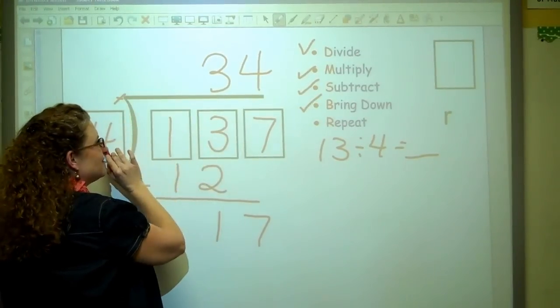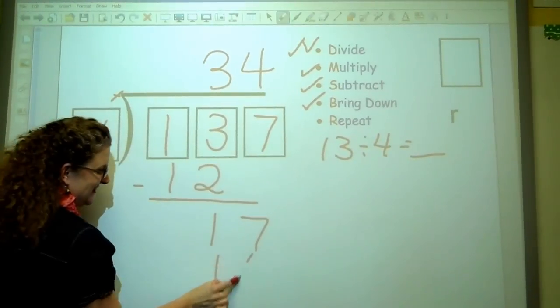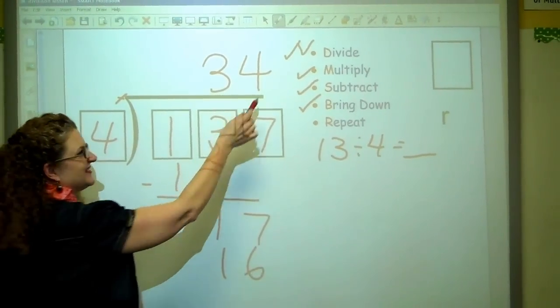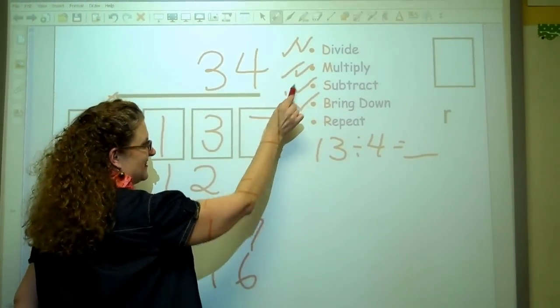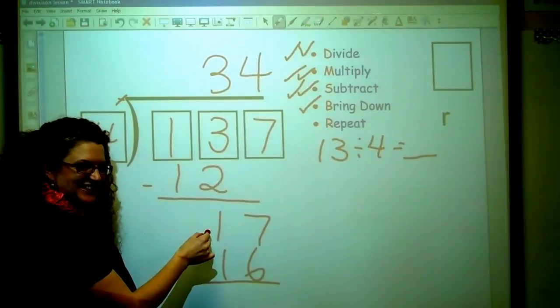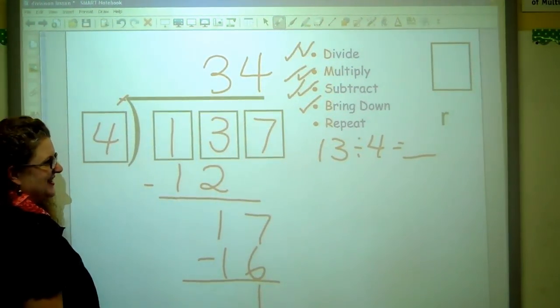4 times 4. Now, that was our division part. 4 times 4 is 16. And now what's my next step after I multiply 4 times 4? Well, it is subtract. So I'm going to subtract 16 from 17. And what am I going to get? I'm going to get the 1 left over, right?